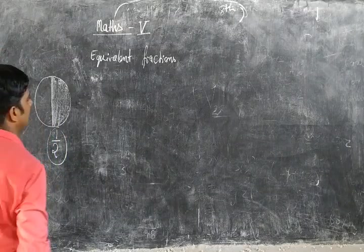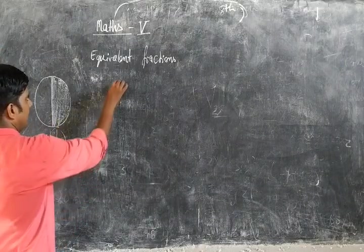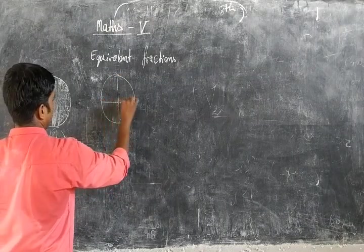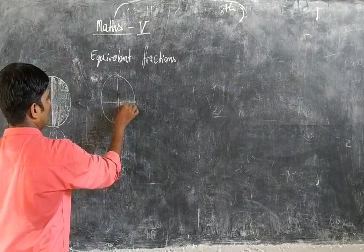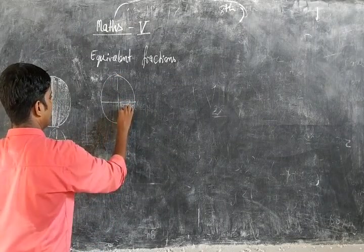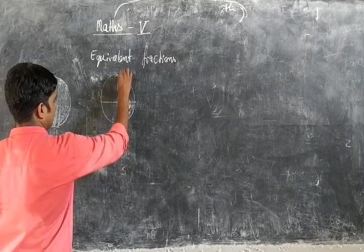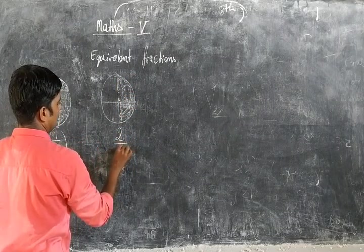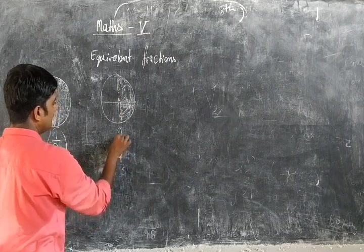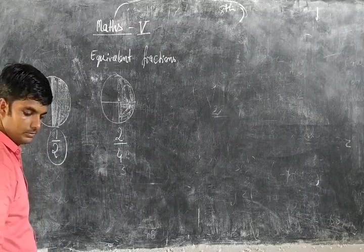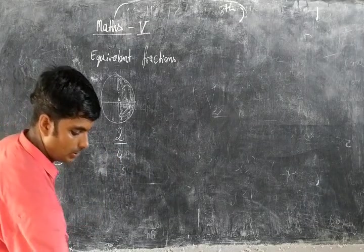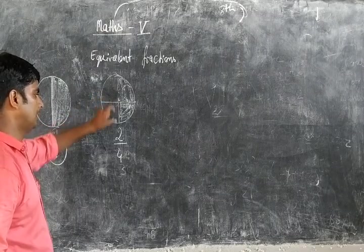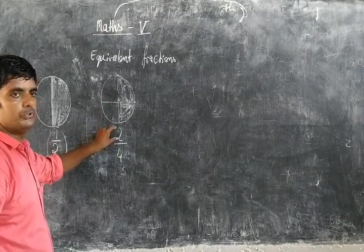So you can represent one part as one-half. Now suppose that one thing is divided into four equal parts and you take two parts. Like this. We can represent two parts as 2 by 4. This is also your half.